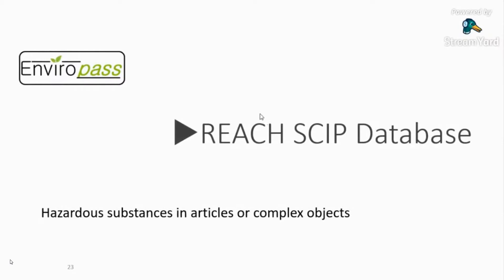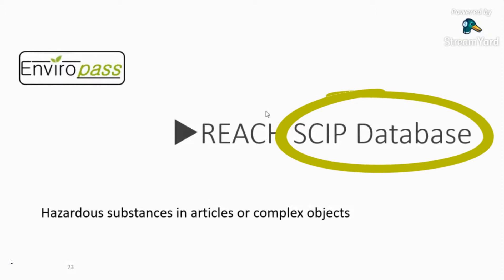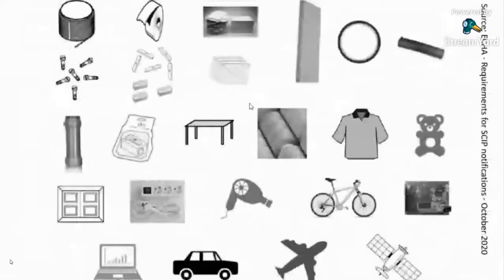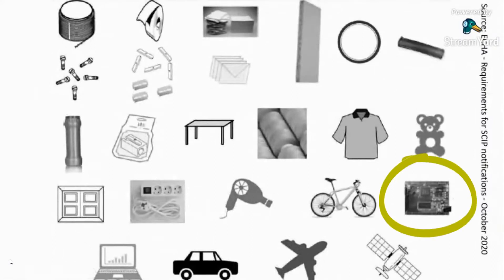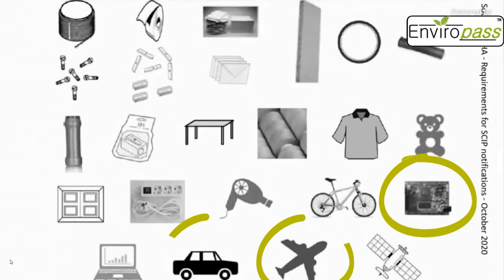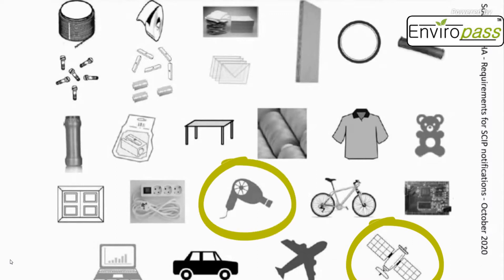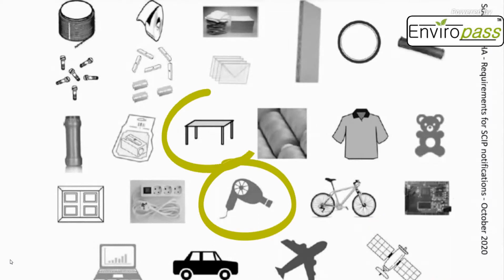Substances in complex objects must be declared via a database called the SCIP database. It's managed by the European Chemicals Agency (ECHA) and covers most complex products. Examples include a PCB assembly, a plane, a car, or a satellite.